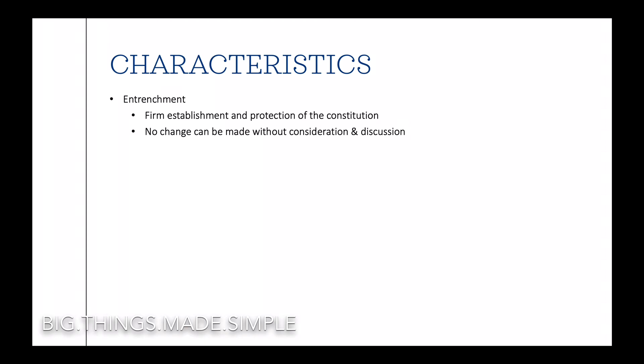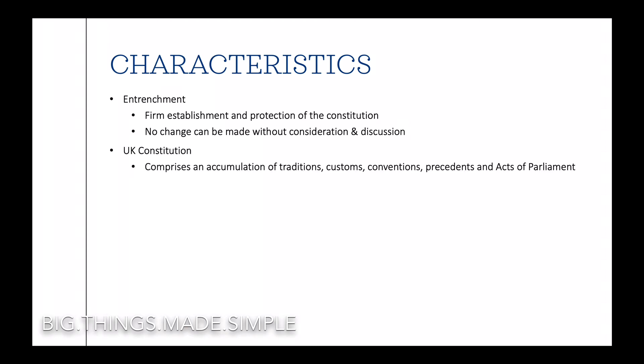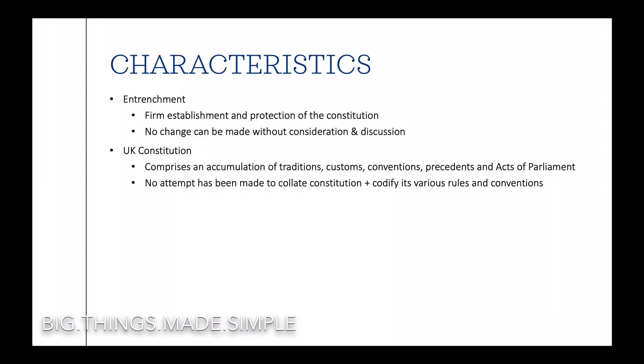Interestingly, the British constitution comprises an accumulation of traditions, customs, conventions, precedents, and acts of parliament, which serves as a framework within which those who exercise power must operate. Its origins can be traced back to the period after the Norman Conquest in 1066. But so far, there has been no attempt made to collate, consolidate, and codify its various rules and conventions.